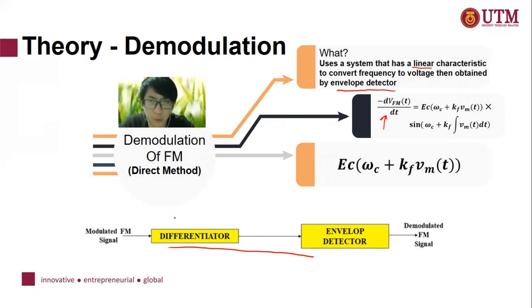For the first equation, we differentiate the equation from previous modulation signal and then the envelope detector will detect the demodulated FM signal which is EC times (omega C plus KF times VM of t).